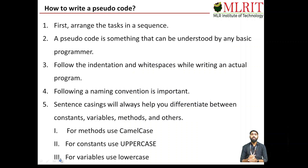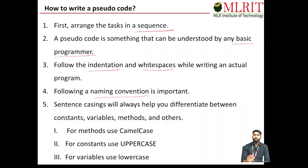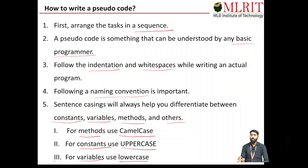Now we see how to write a pseudo code. When writing pseudo code, we follow some instructions. First, arrange the tasks in a sequence — step by step. A pseudo code is something that can be understood by any basic programmer. Follow indentation and white spaces as in an actual program. Following naming conventions is important: sentence casing helps you differentiate between constants, variables, methods, and others. We use camel case for methods, uppercase for constants, and lowercase for variables.